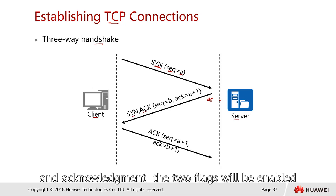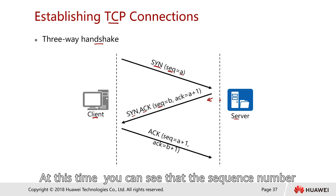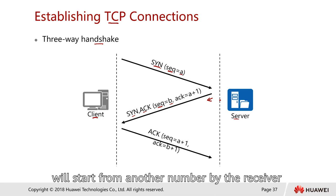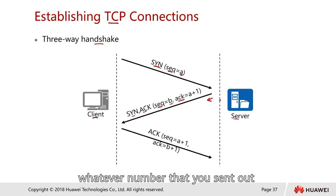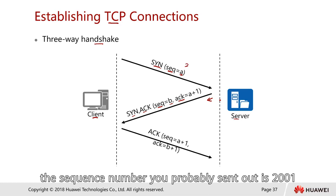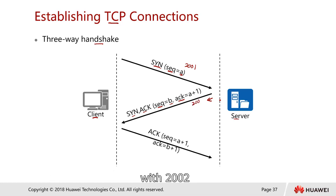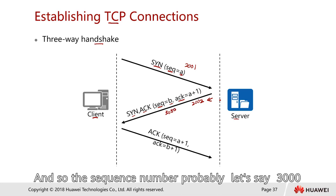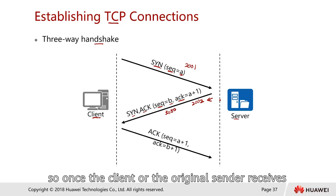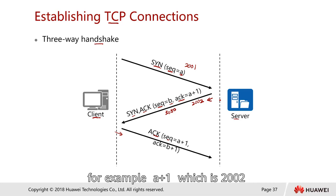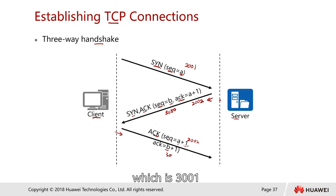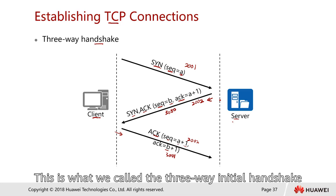Once the receiver gets the SYN, it sends back SYN-ACK - both flags enabled. The receiver starts its own sequence number, say 3000, and acknowledges the sender's sequence number plus one - for example, if the sender sent sequence 2001, the acknowledgement number is 2002. The original sender then responds with ACK only: sequence number A+1 which is 2002, and acknowledgement B+1 which is 3001. This completes the three-way handshake, after which application packets like HTTP or FTP can be sent.